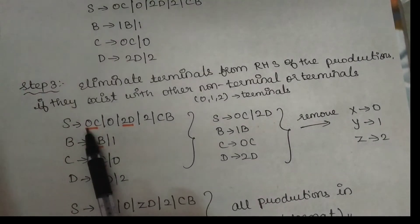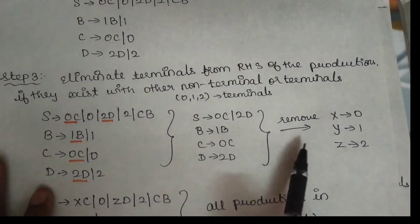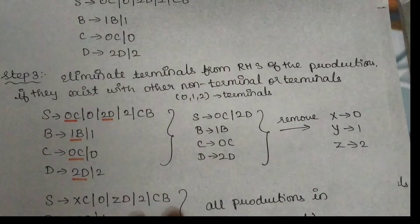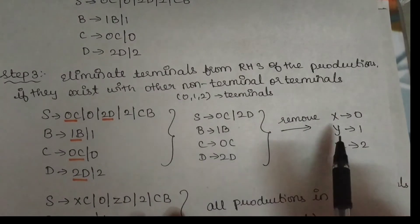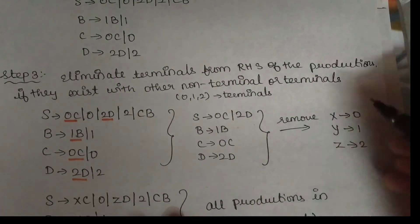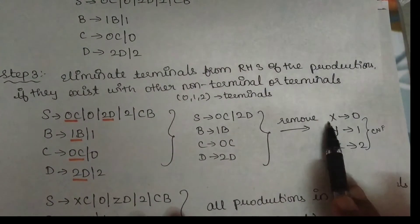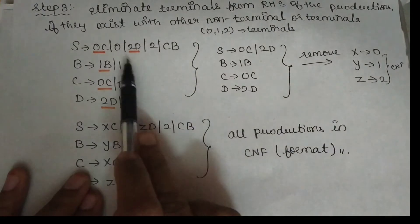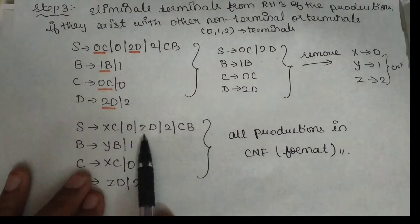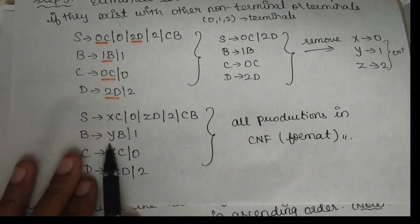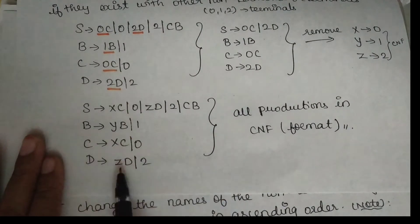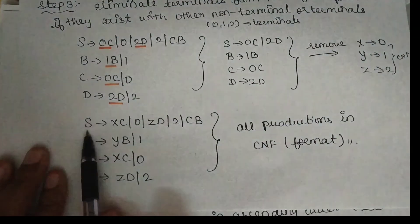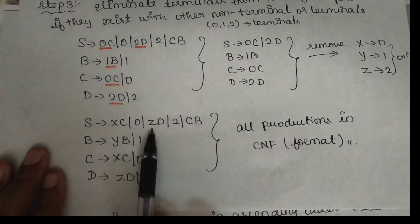For Chomsky Normal Form, a production can only be a single terminal, or two non-terminals. So we create new productions. We substitute 0 with X, 1 with Y, and 2 with Z. For example, if you have 0, substitute X; if you have 2, substitute Z; if you have 1, substitute Y. This gives us X to 0, Y to 1, Z to 2 — all in Chomsky Normal Form with non-terminal to terminal.